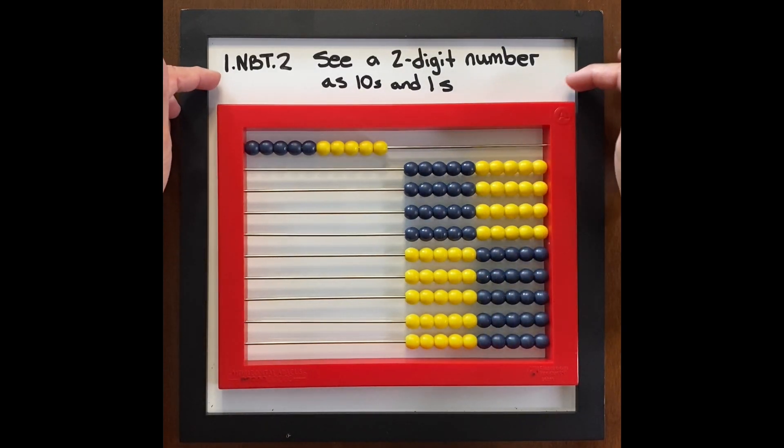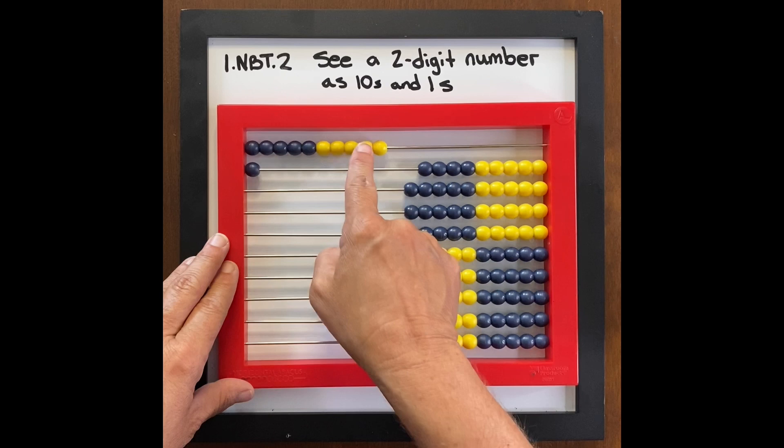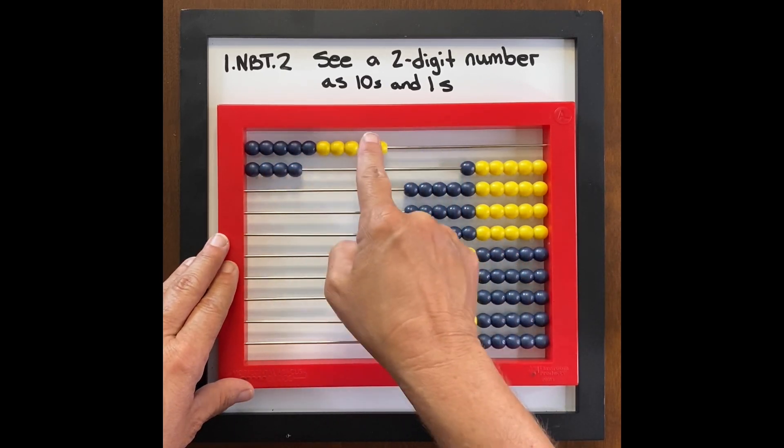So here we have one ten one, one ten two, one ten three, one ten four, one ten five.